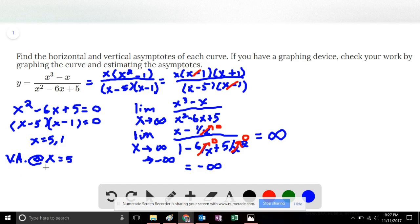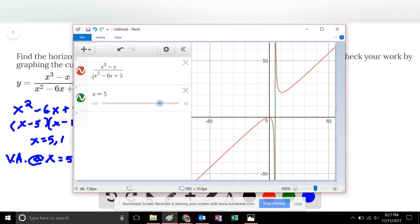Earlier we did find one vertical asymptote at x equals 5. We can use the graphing tool and plot the function. Here we can see clearly there is a vertical asymptote at x equals 5, but there is no horizontal asymptote. This is in agreement with our work for this problem.